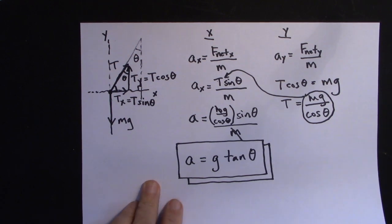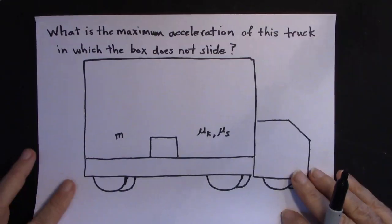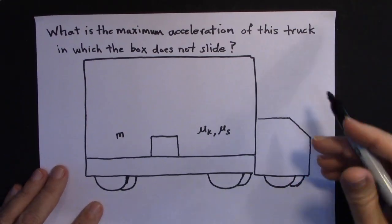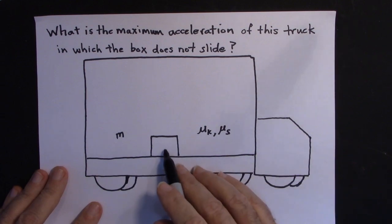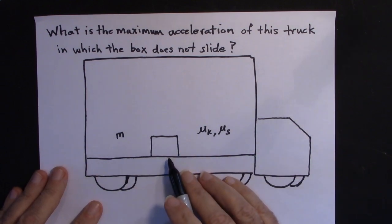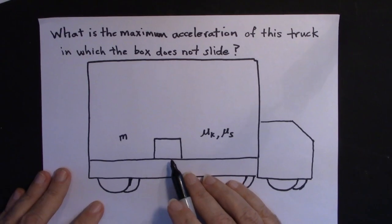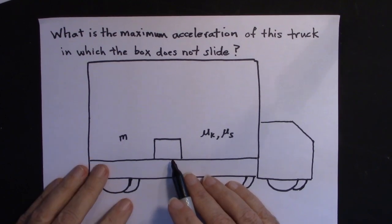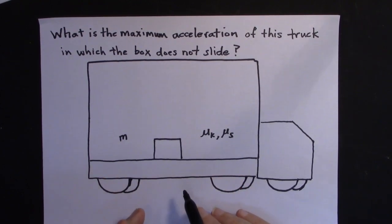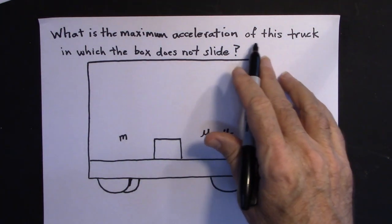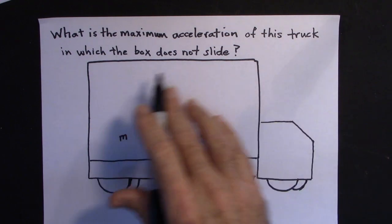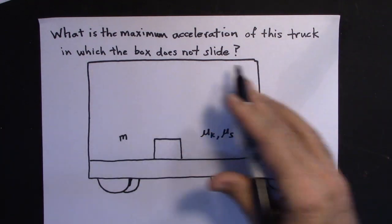Let's do the next problem. We're in a truck — the driver is driving along and there's a crate resting in the back of the truck, not sliding. The truck driver wants to know the maximum acceleration they can give the truck without having the box slide.